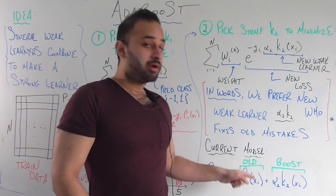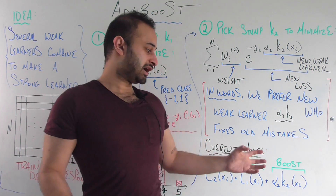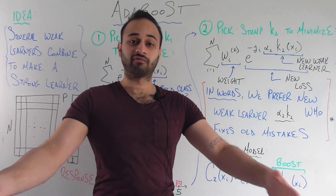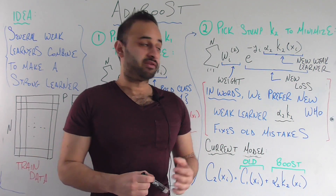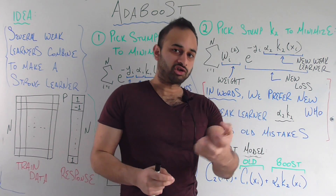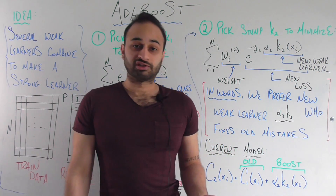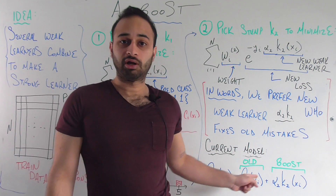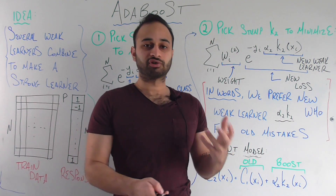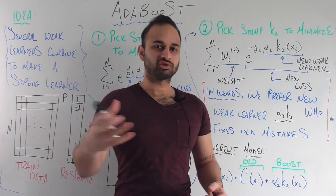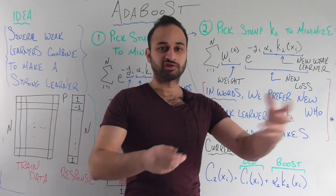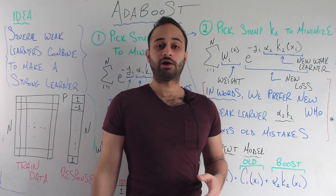So our new model is that old model plus the boost, and the boost is alpha two K2, which is going to build on or fix the mistakes of the previous classifier. And these alphas — you can see their role a little bit better now. They're basically weights on how much of each weak learner we want. Alpha one and alpha two kind of tell the story about how much of the first one do you want, how much of the second one do you want, how much of the third one do you want. It's possible that we might want more of a certain weak learner than another, and our alphas allow us to control that.